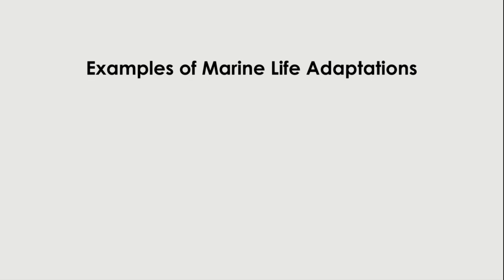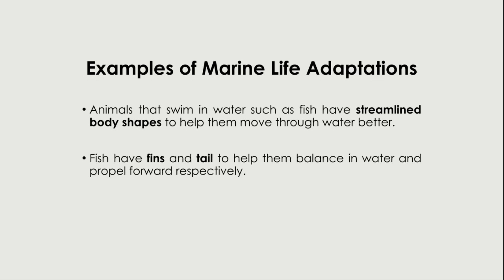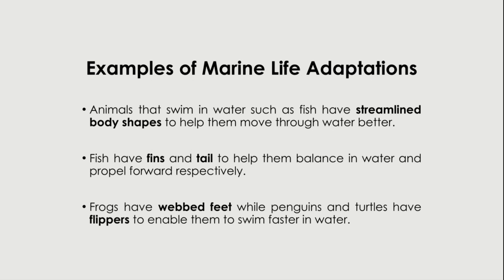Some examples of marine life adaptations: fish have streamlined body shapes to help them move through water better, and fins and tail to help them balance and propel forward respectively. Frogs have webbed feet while penguins and turtles have flippers to enable them to swim faster. Each animal has specific adaptations based on their body structure and how they obtain food.